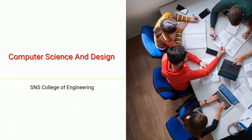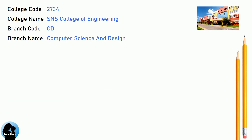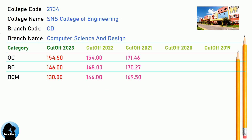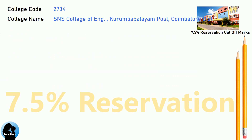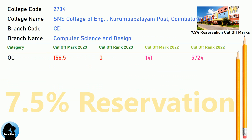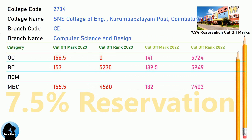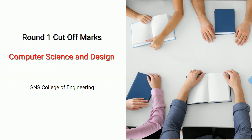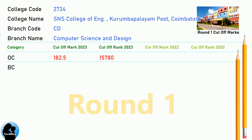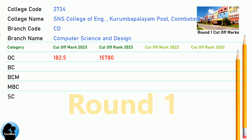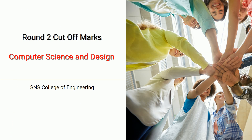DNA Cut-Off for ASNS College of Engineering in Computer Science and Design. DNA 7.5 Reservation Cut-Off for ASNS College of Engineering in Computer Science and Design. DNA Round 1 Cut-Off for ASNS College of Engineering in Computer Science and Design. DNA Round 2 Cut-Off for ASNS College of Engineering in Computer Science and Design.